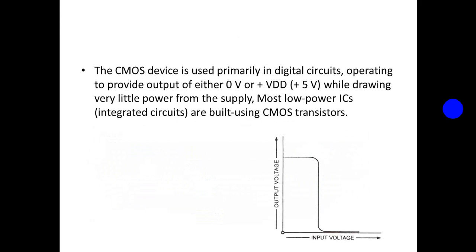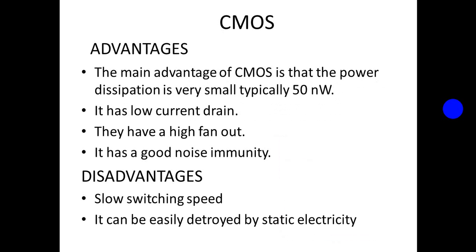This is the input and output voltage characteristics. The main advantage of CMOS is that the power dissipation is very small, typically 50 nW. It has low current drain, a high fan-out, and good noise immunity.